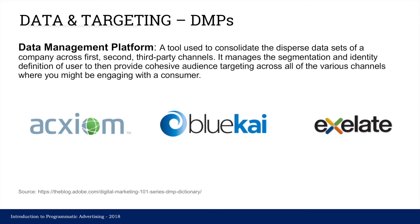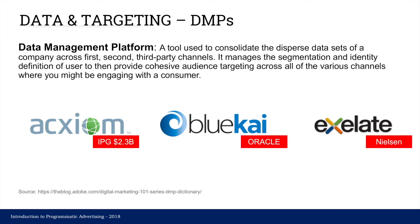Or they could use a third-party. These third-party ones — among the largest are Axiom, Blue Kai, and Exalate — and they are very valuable. Blue Kai was acquired by Oracle, Exalate was acquired by Nielsen, and most recently Axiom was acquired by IPG for $2.3 billion. Axiom claims to have data on about 2.2 billion users, so essentially IPG bought them for about a dollar a user, which is a pretty good deal.